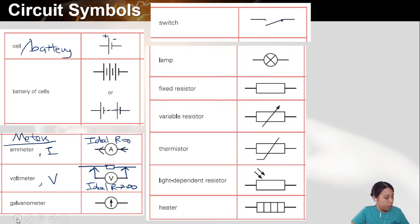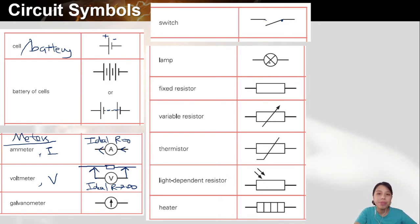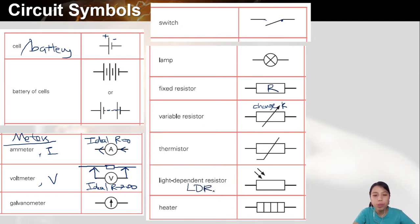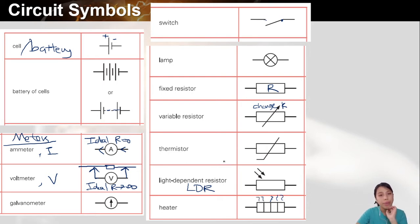Some other common ones we'll look at in chapter 19, maybe a little bit of 20: the lamp has an X inside it. Resistors — a variable resistor means this one can change resistance; the arrow means it can change, while a fixed resistor is just a rectangle. Thermistors and LDRs we'll look at more later. A heater is basically like a resistor but it gets very, very hot.